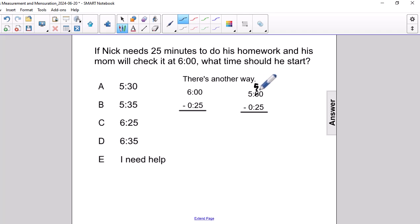And add a 1 here. So, that's going to give me a 5. 5 minus 2 is 30. And then 5 minus 0 is 5. And that's how we get our time of 5:35.